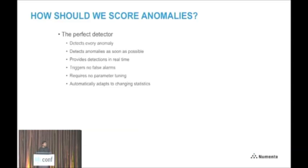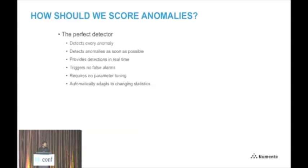So how should we score these? Let's define what we mean by an ideal detector. The perfect detector would detect every single anomaly and detect every anomaly as soon as possible — if two algorithms detect the same anomaly, the one that detected it earlier should get preference. It should provide detections in real time with no look-ahead. The ideal detector would have no false positives. In streaming analytics you're dealing with thousands of metrics, and you cannot have manual parameter tuning — whatever is done has to be done automatically. Also, statistics change all the time in streaming data, so you must be able to automatically adapt to changing statistics.